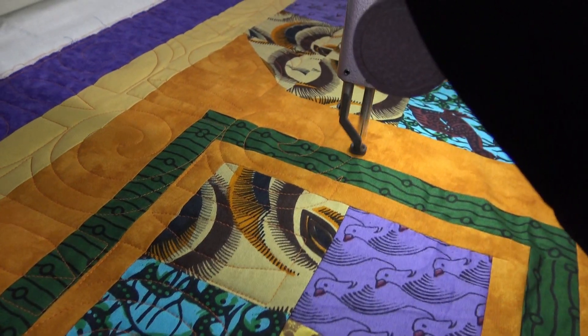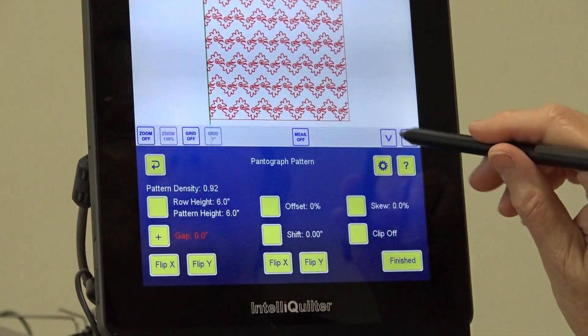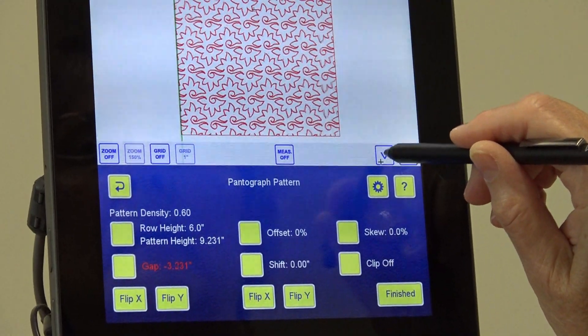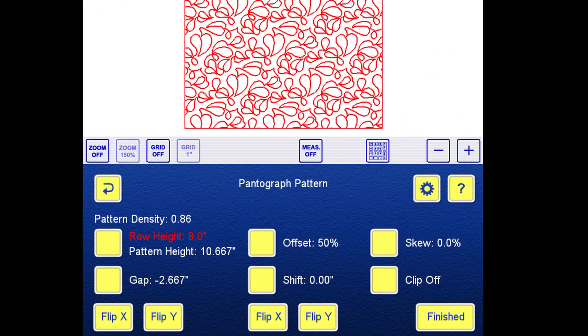Design both simple and unique edge-to-edge pantos with IQ's features, and eliminate row gap while maintaining the pattern aspect ratio for beautiful results. There are so many design and editing options available with IntelliQuilter.